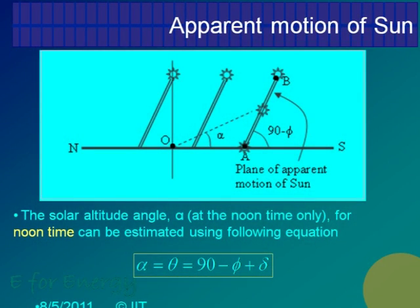This is what happens eventually. First of all, the angle in the plane in which the sun is moving — the sun is in the morning here, goes there, comes back — it is always in the same plane. That plane is always tilted 90 minus latitude. So with respect to horizontal, this is 90 minus latitude. The position of the sun's plane keeps on changing as well.